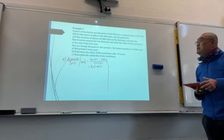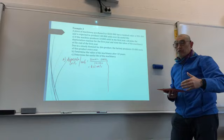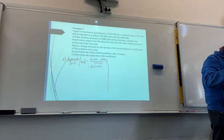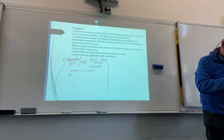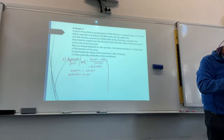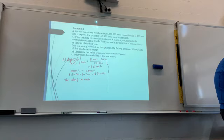After one unit the value reduces by $2, after two units by $4, and so on — it's a straight line based on units produced. In the first year, 10,000 units are produced: 10,000 × $2 = $20,000 depreciation expense. Therefore, $330,000 − $20,000 = $310,000. Part A: the value of the machinery at the end of the first year equals $310,000. Remember your units.